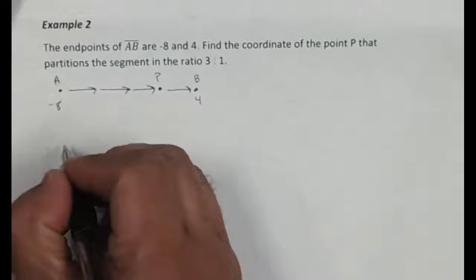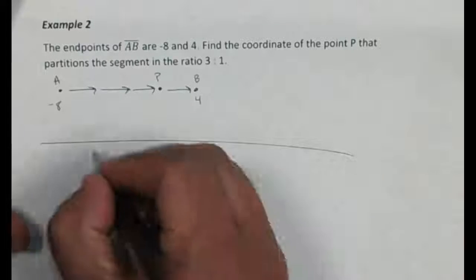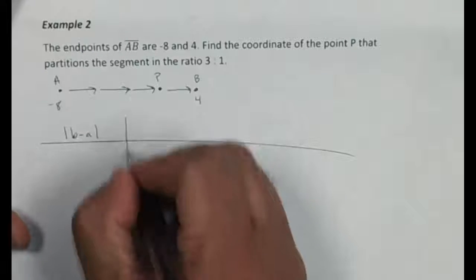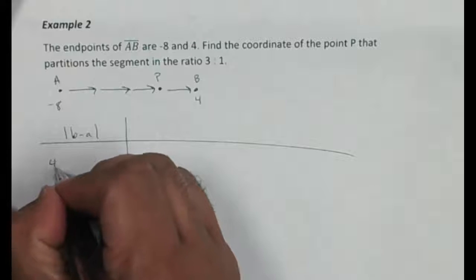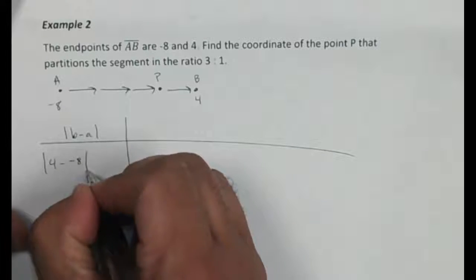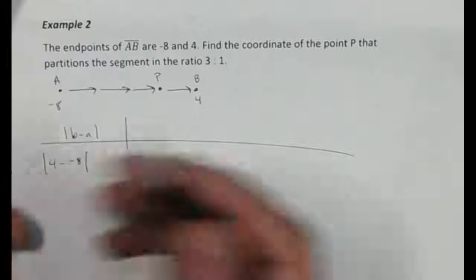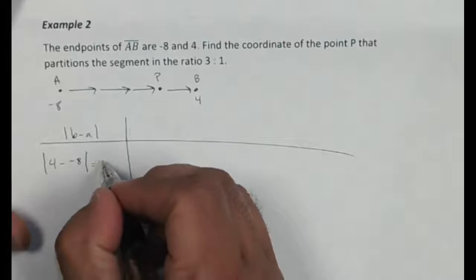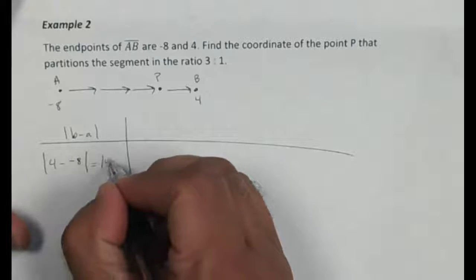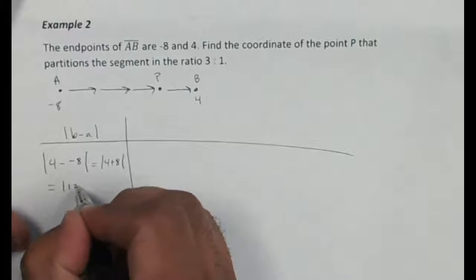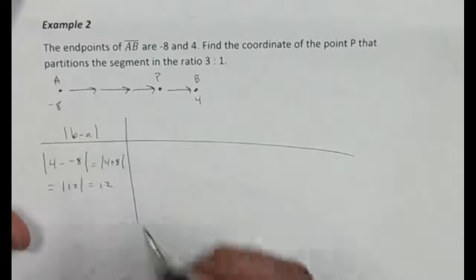All right, so first thing we have to do, remember, is we want the absolute value of the two coordinates. So that's going to be 4 minus a negative 8. We want the absolute value of that. Again, we want to force it to be positive. So this becomes 4 plus 8, which is going to give me an absolute value of 12. So that means my distance, my overall distance, is 12.